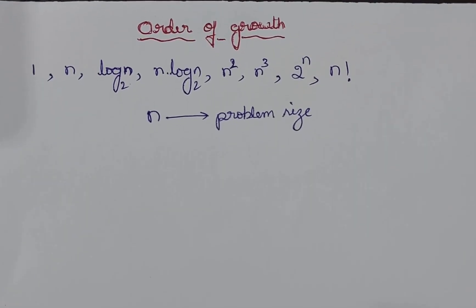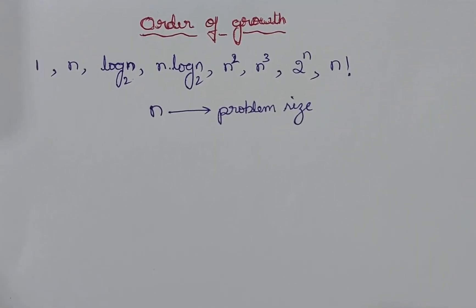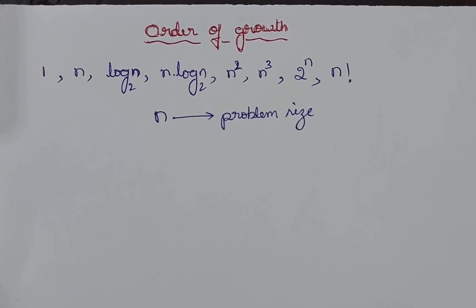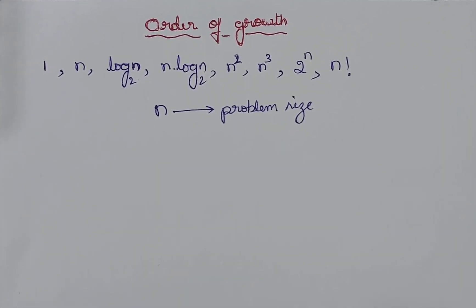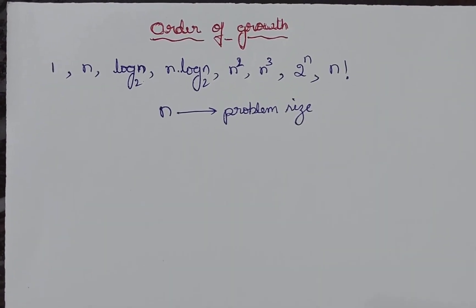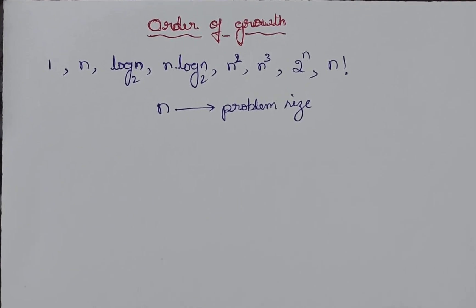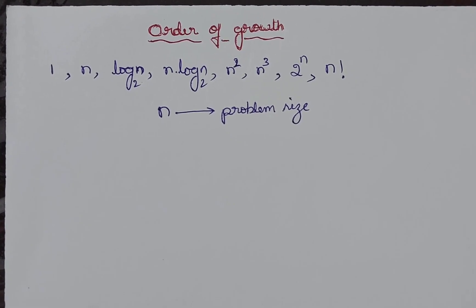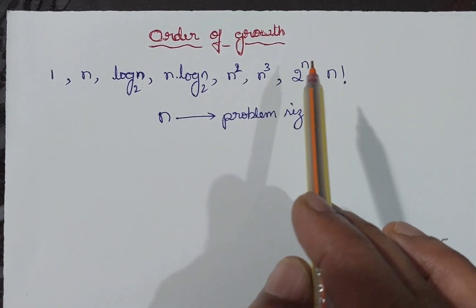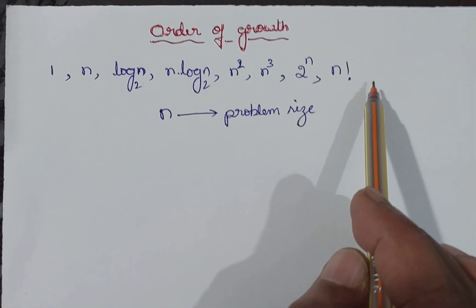Hi everyone. In this video I am going to explain what you mean by order of growth. The terminologies like order of growth, basic efficiency classes, time complexity, and asymptotic notations are all used in this entire course on design and analysis of algorithms. In the previous videos we learned that time complexity is the total time taken by an algorithm to run completely. The mathematical function used to represent the time complexity of an algorithm is called a basic efficiency class.